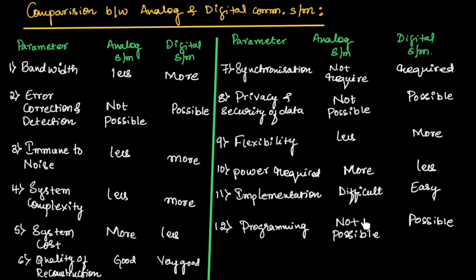In analog systems, programming is not possible, but in the digital system, programming is possible.